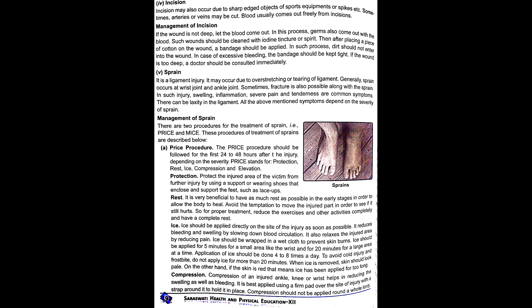Sprain is a ligament injury. It may occur due to over-stretching or tearing of a ligament. Generally, sprains occur at the wrist joint and ankle joint. Sometimes a fracture is also possible along with the sprain. Common symptoms include swelling, inflammation, severe pain, tenderness, and there can be laxity in the ligament. All the above-mentioned symptoms depend on the severity of the sprain.